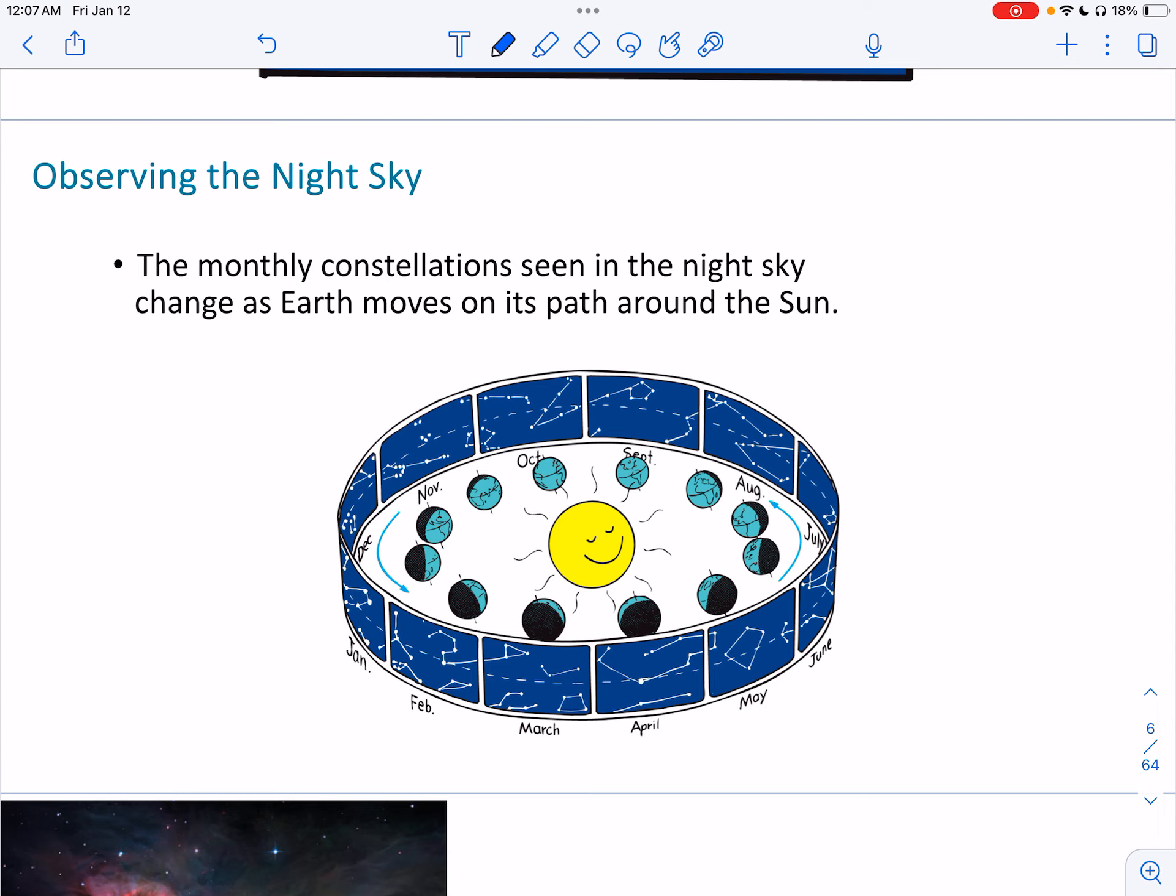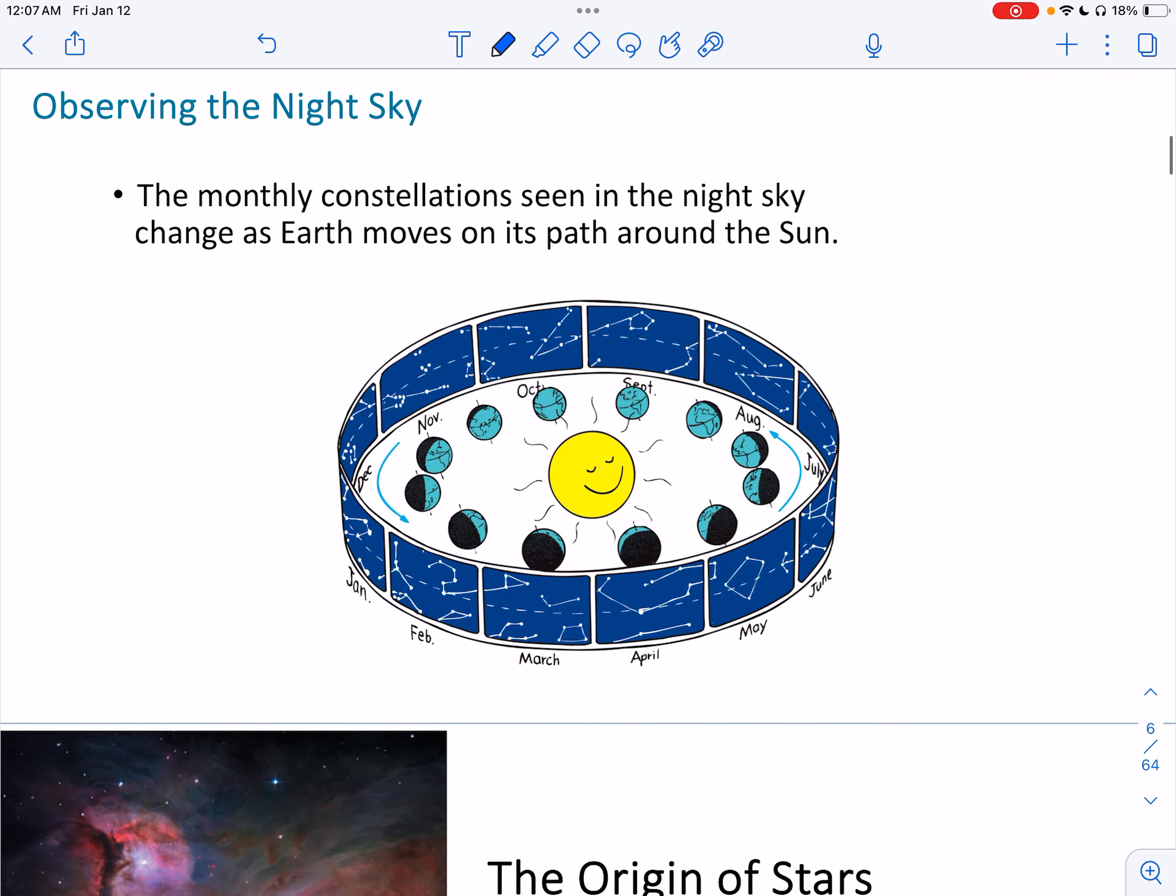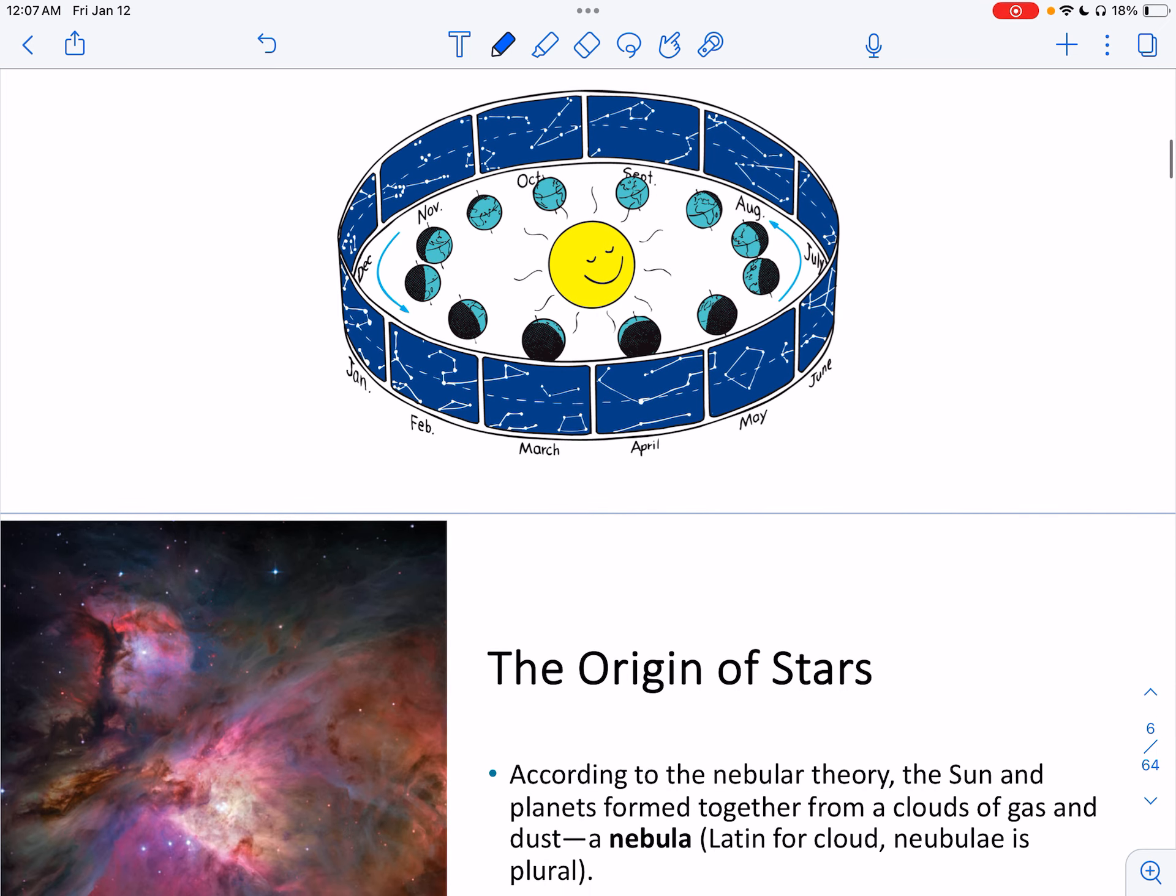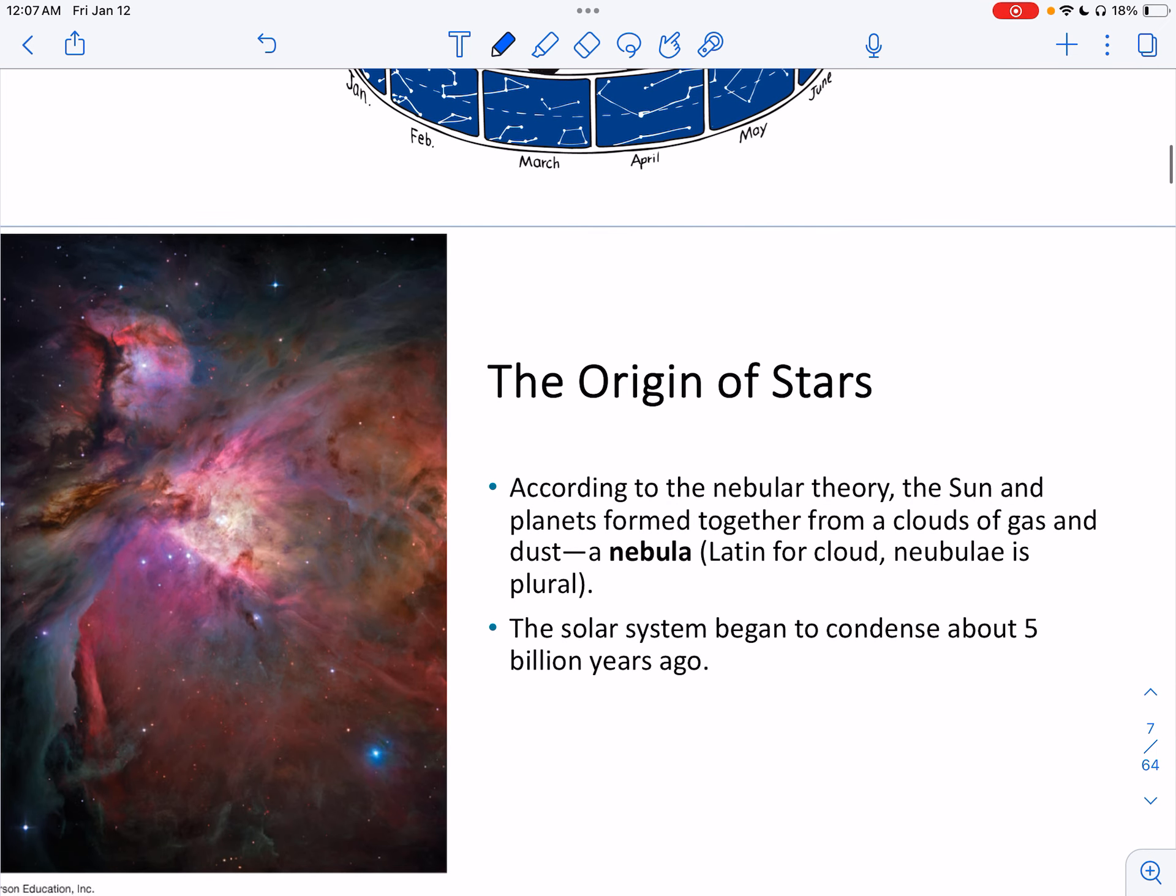So the monthly constellations and night sky change as the earth moves its path around the sun, and as well as, again, we talked about it spinning on its axis.